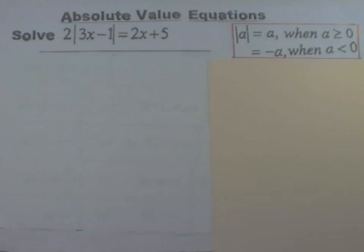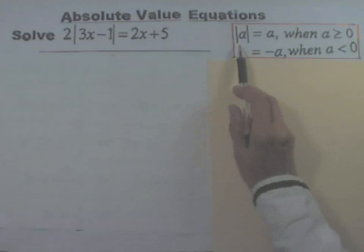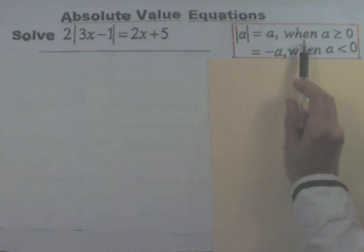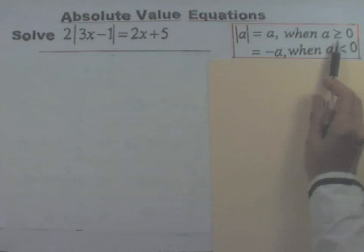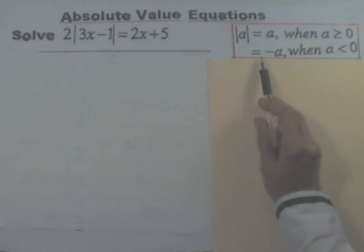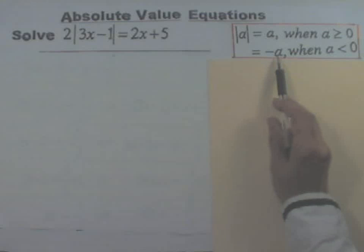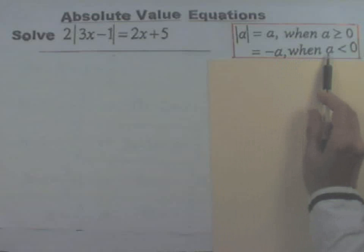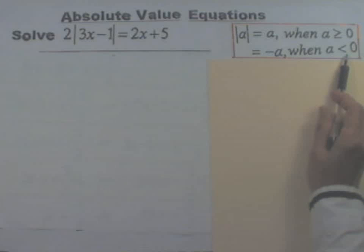This is a review of absolute value equations. You need to recall that the absolute value of a is equal to a when a is greater than or equal to 0, but it is equal to negative a when a itself is less than 0.